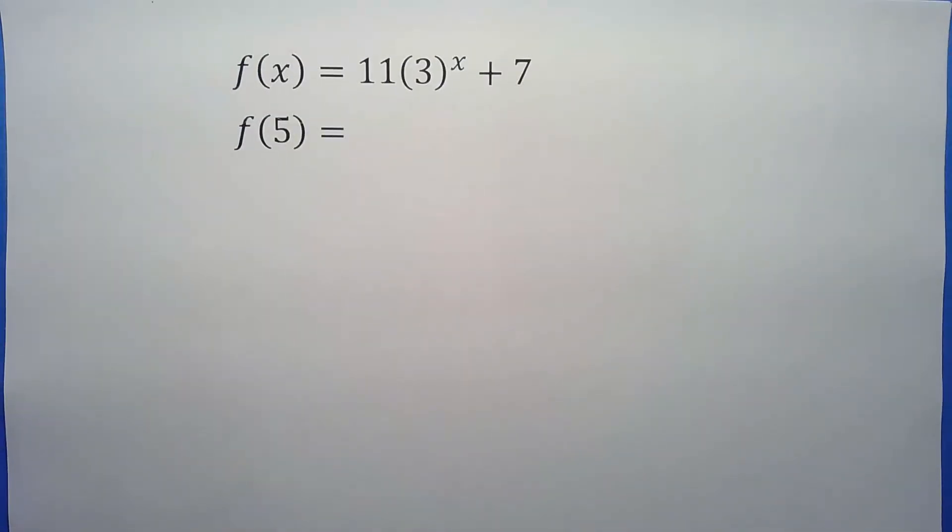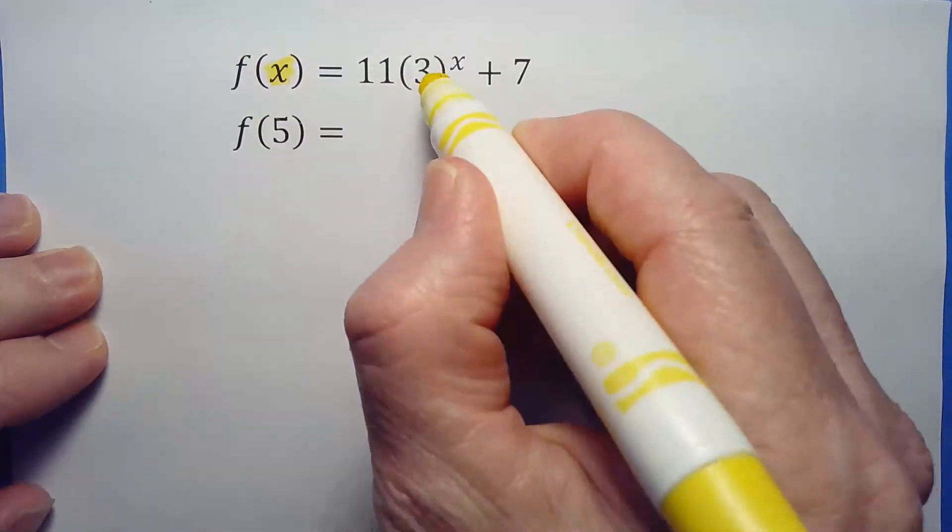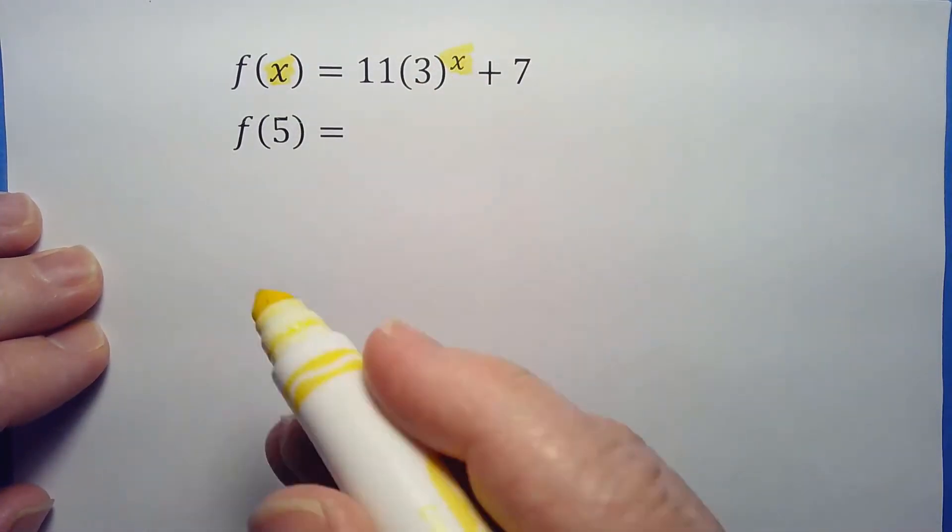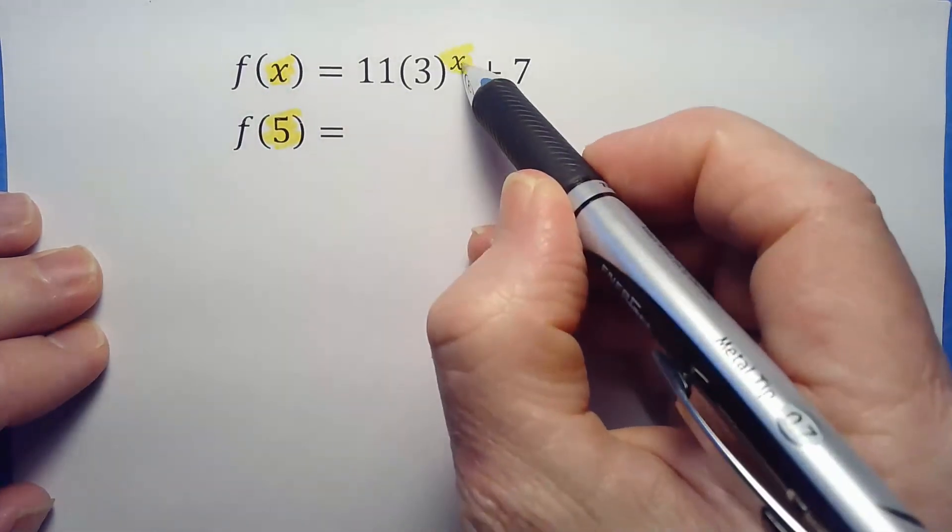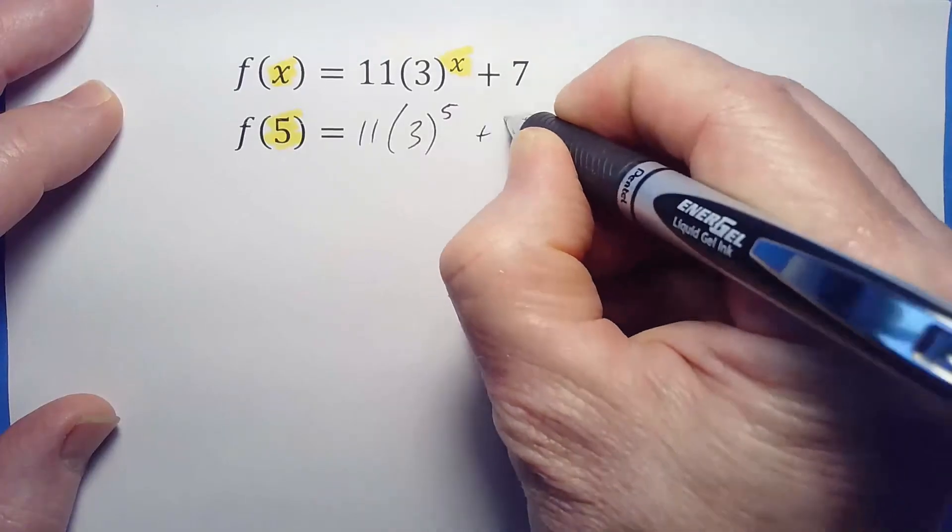This one's a little more complicated—there's an extra term. But if we're careful about it, it doesn't have to be that big a deal. Instead of this x, now we're going to put a 5. You just write it out: 11 times 3 to the power of 5 plus 7.